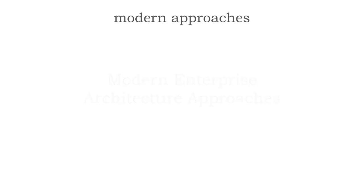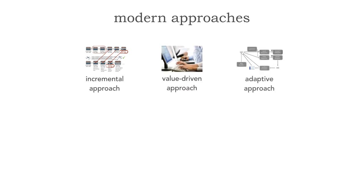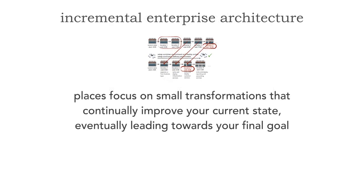These three modern approaches do address the issues with the traditional approaches and have shown a lot of promise in actual companies. The three modern approaches are the incremental approach, the value-driven approach, and the adaptive approach. The incremental approach really places a focus on small transformations that will continue to improve your current state — the state of what the business is in — that eventually lead towards a final goal.